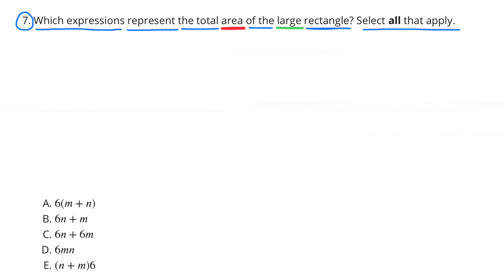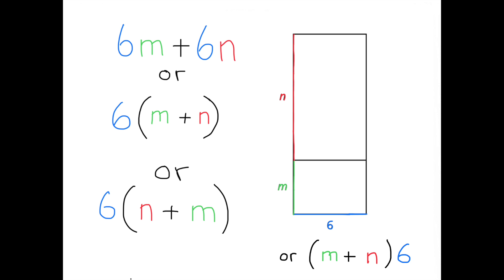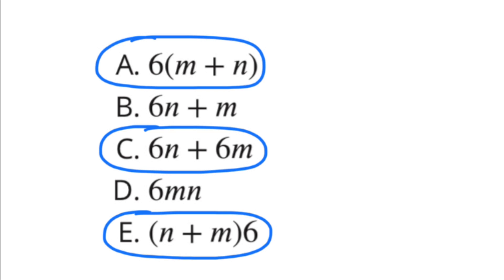Problem 7 — which expressions represent the total area of the large rectangle? We have two rectangles stacked: one is 6 times M and the other is 6 times N. Adding them gives 6M plus 6N. That's also equivalent to 6 times (M plus N), or 6 times (N plus M), or (M plus N) times 6. The correct selections are A: 6 times (M plus N), C: 6N plus 6M, and E: (N plus M) times 6.